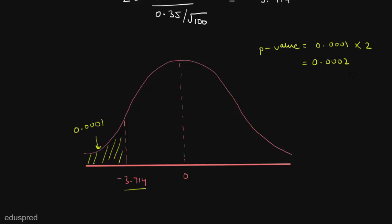Our next step is to see whether we reject the null hypothesis or do not reject it, and for that we compare this p-value with alpha. Recall that alpha is equal to 0.01. The p-value of 0.0002 is less than alpha, and when the p-value is less than alpha we reject the null hypothesis. Our null hypothesis was mu equal to 5, and since we are rejecting it, we can conclude that the true average weight of the tablet is not 5 grains.